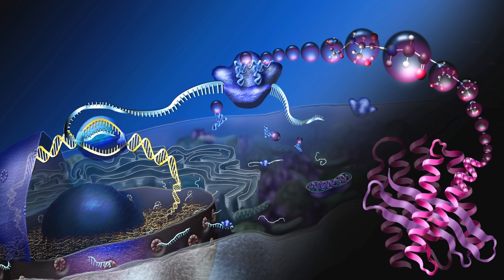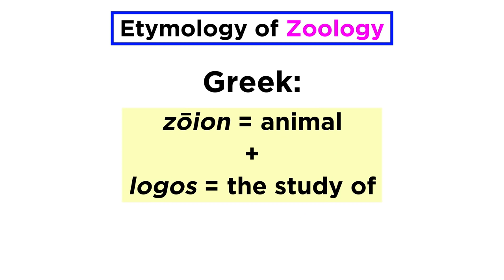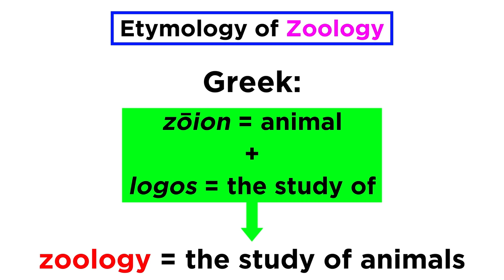After all, only once we understand the building blocks of life can we explore the diversity of living things, and zoology studies an enormous part of that diversity. So what does zoology mean precisely? The term zoology comes from the Greek words zoion, meaning animal, and logos, meaning the study of — so, the study of animals.